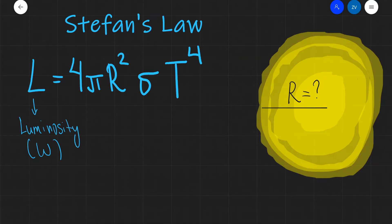It's the total power that is coming out of the star, the total amount of joules per second. 4πR² is the surface area, and in this case, R is the radius of the star. That's just given in meters.